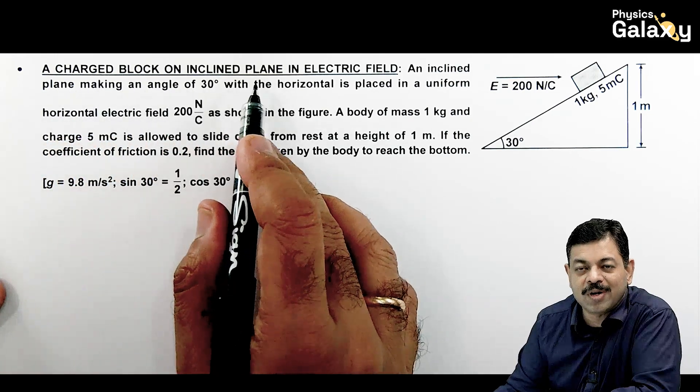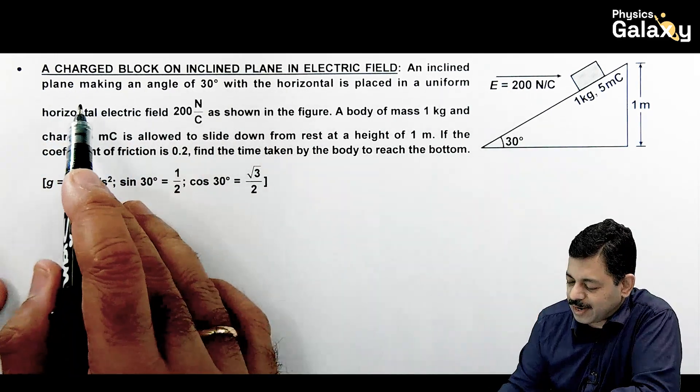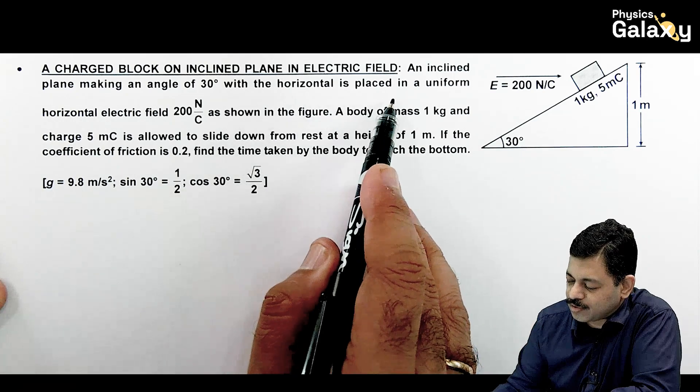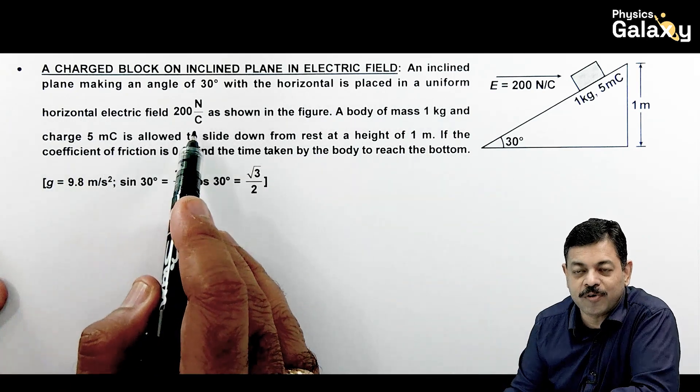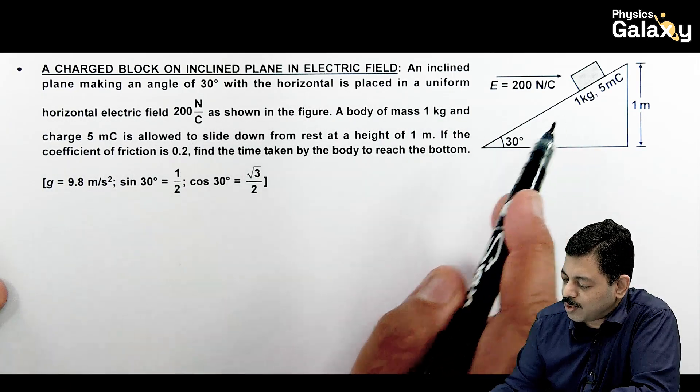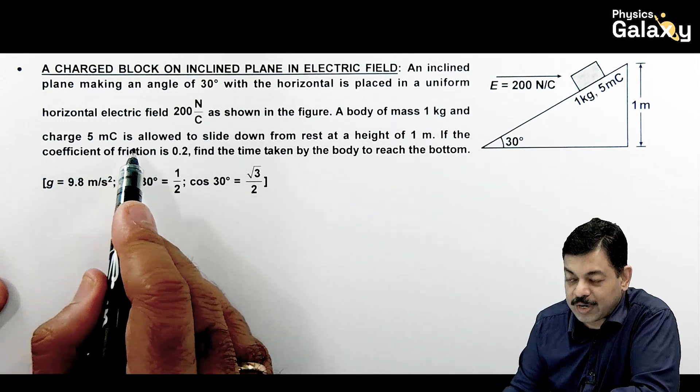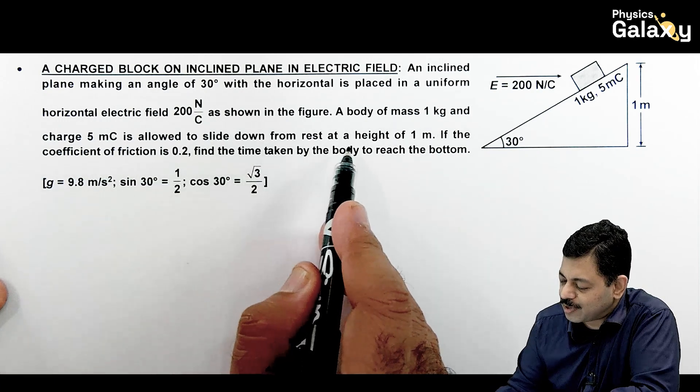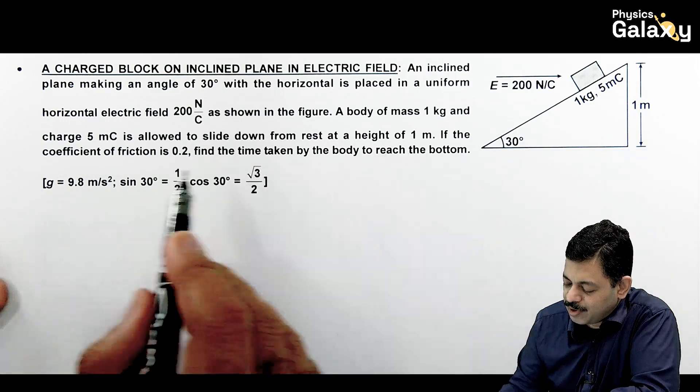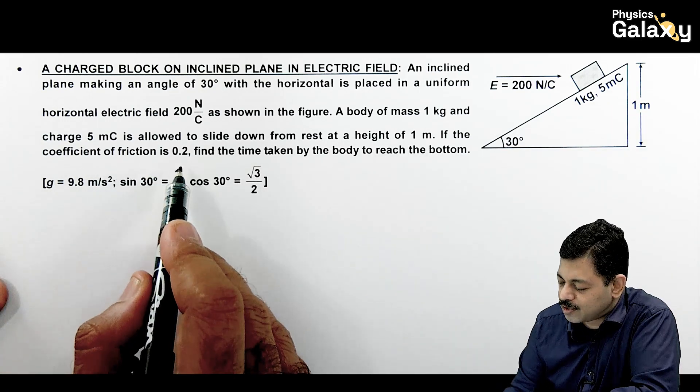We will look at this case, which is analyzing a charged block on an inclined plane in an electric field. It says an inclined plane making an angle 30 degrees with the horizontal is placed in a uniform horizontal field of 200 Newton per coulomb as shown in the figure. A body of mass 1 kg and charge 5 millicoulomb is allowed to slide down from rest from a height of 1 meter. If the coefficient of friction is 0.2, we need to calculate the time.